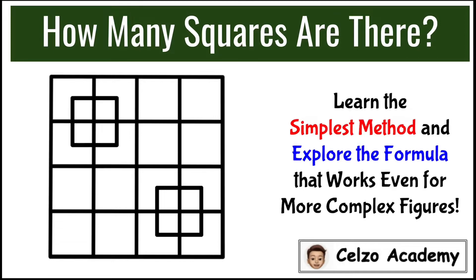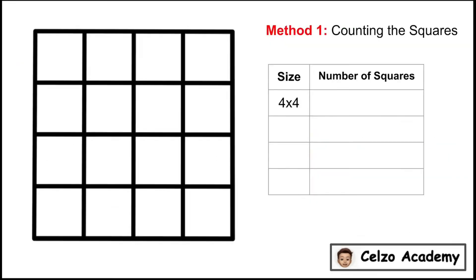Let's begin with the counting method. First, I will remove the two squares inside the big square. So now we have a 4x4 grid. To have a more systematic way of counting the number of squares, we will categorize the squares according to their sizes.